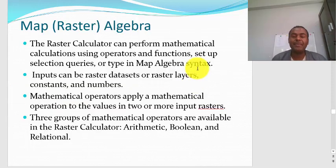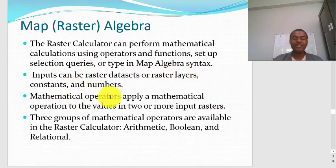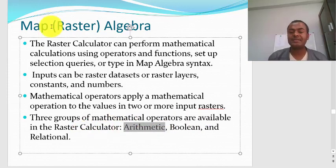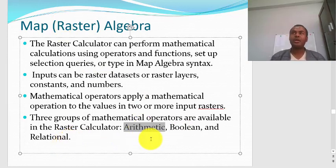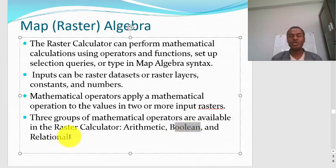Another important spatial analysis function is map algebra, using the raster calculator tool in ArcGIS. Inputs can be raster datasets, raster layers, constants, or numbers. Three groups of mathematical operations are available: arithmetic operations (addition, subtraction, division, multiplication), Boolean operations (absence/presence maps), and relational operations (greater than, less than, or equal to comparisons).